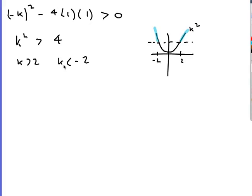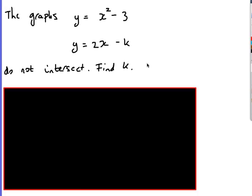If you're not sure on where these inequalities go, choose a number. See what happens. For example, when k is negative 3, negative 3 squared. Yeah, that is greater than 4. So that is the right way around.